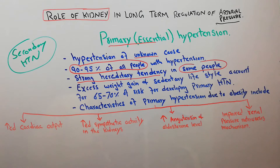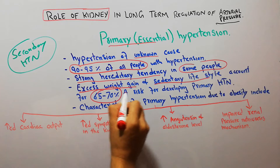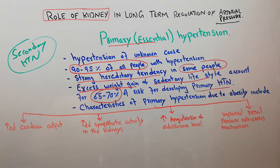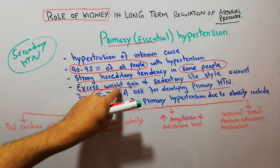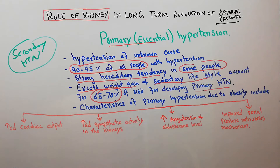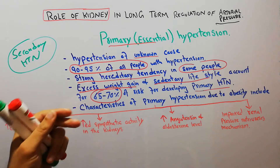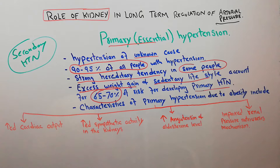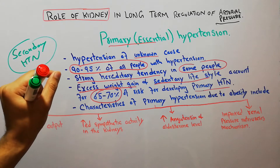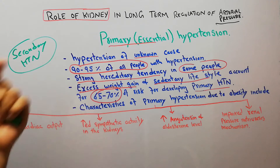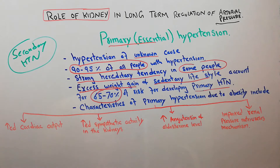Excess weight gain and sedentary lifestyle account for 65 to 70 percent of the risk for developing primary hypertension. The sedentary lifestyle of most people today is due to office work with little physical exertion. On top of that, poor eating habits cause weight gain, which contributes to around 65 to 70 percent of the risk for developing primary or essential hypertension.